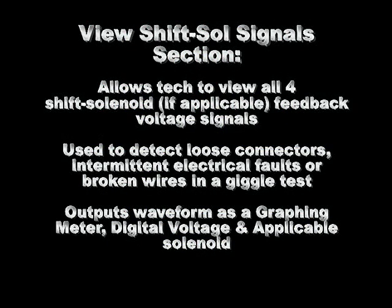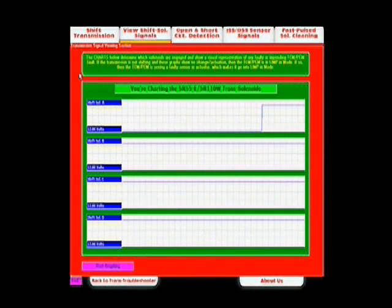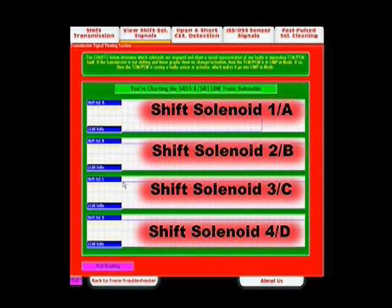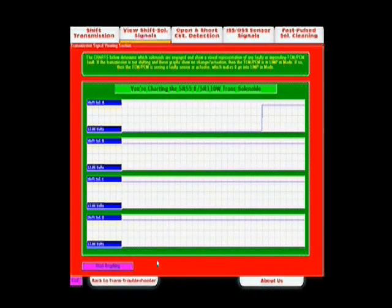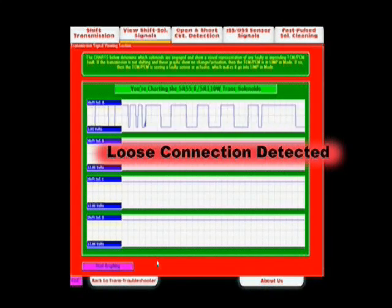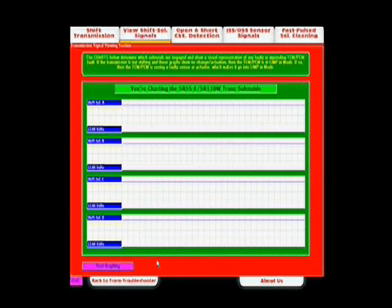Next is the view shift solenoid signal section. Here you'll be able to detect intermittent connections at the transmission harness connector, TCM, or anywhere else in the circuit. This section outputs a waveform to four fast graphing meters with no other adjustment needed — the unit sets itself up completely. On screen you'll see the applicable solenoid digital readouts and the waveform. This section also lends itself to the wiggle test to detect loose connections — by just pressing one button the unit starts graphing, and a loose connection is readily seen as a series of square pulses.